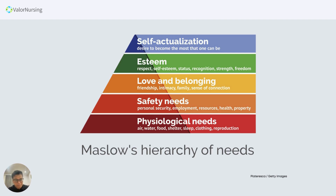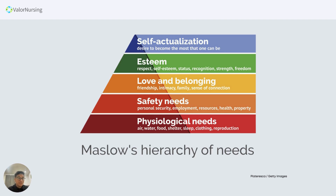The second level is your safety needs, which include personal security, employment, resources, health, and property. The third level is love and belongingness, which includes friendship, intimacy, family, and sense of connection. If asked what to prioritize between personal needs and relationships, you need to prioritize personal needs first. The fourth level going up is self-esteem, covering respect, status, recognition, strength, and freedom. And the fifth, self-actualization — the desire to become the most that one can be.